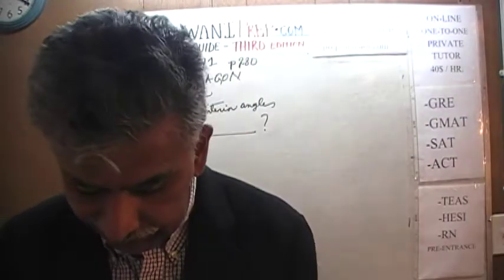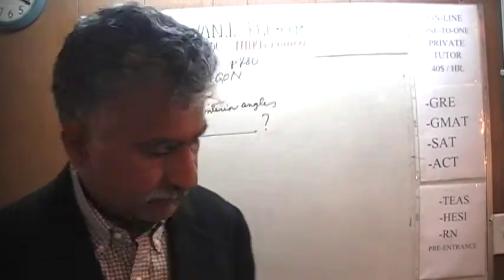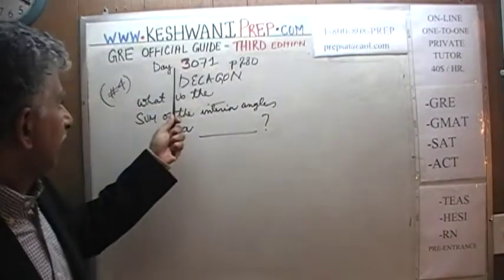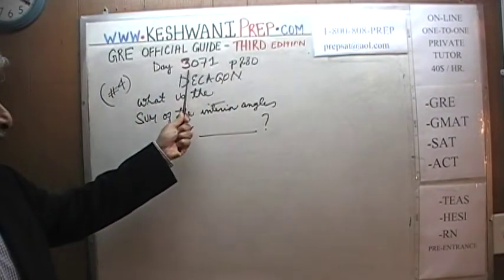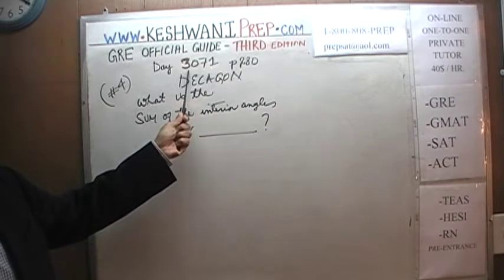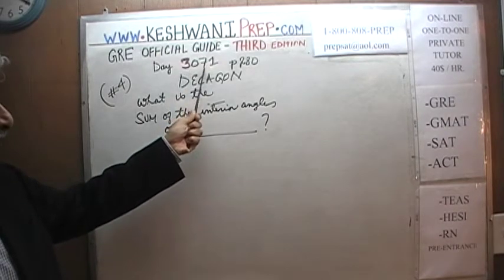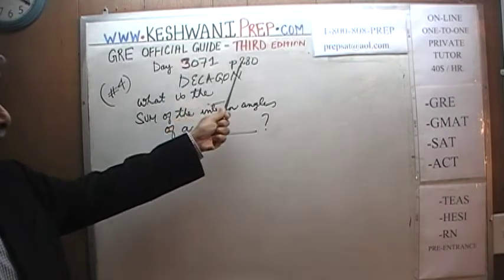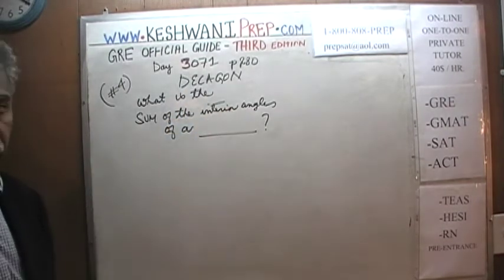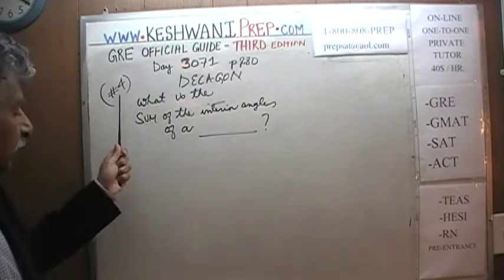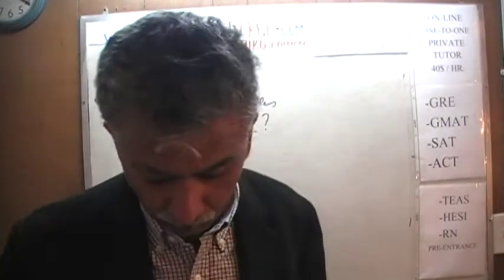Today is our lesson number 71 — day 3071. The "30" indicates we are in the third edition, day 71. We are on page number 280. Problem number 4 is what we are about to work on, and the problem, as you can see, is already on the blackboard.